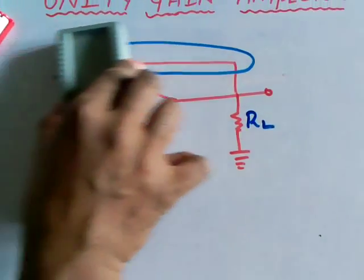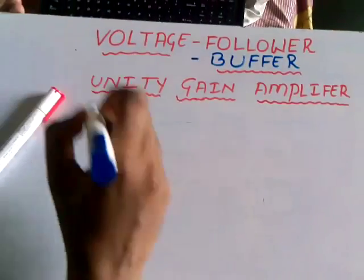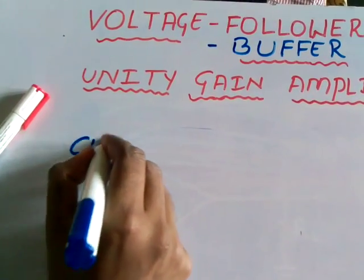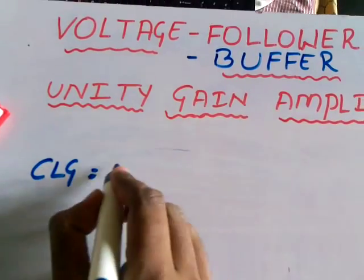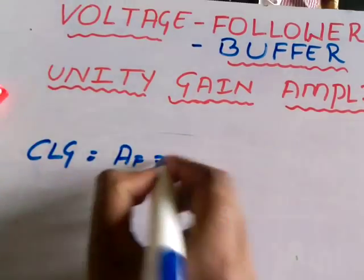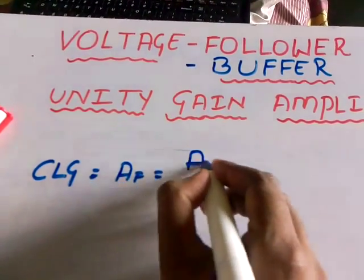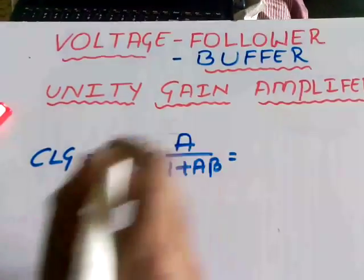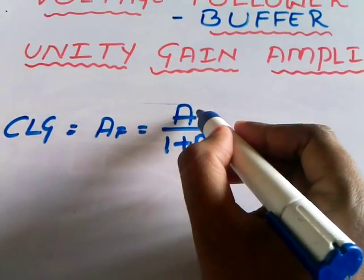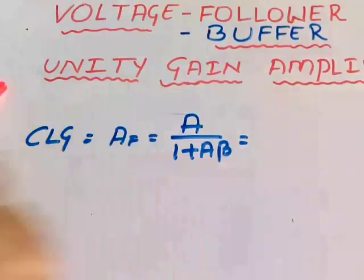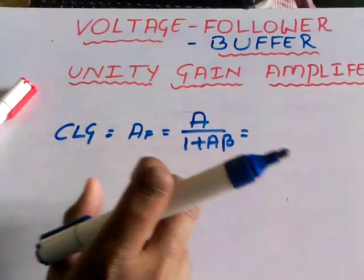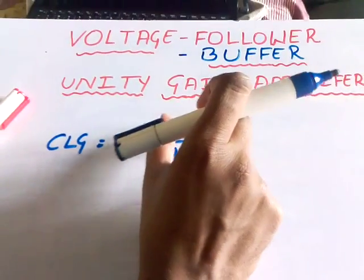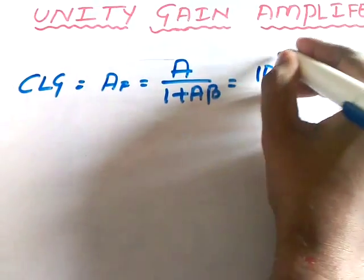By this, we can now calculate the closed loop gain of the device. That is, closed loop gain is equal to the forward gain — the transfer function is A divided by 1 plus A·beta. Where A is the internal amplification gain of the operational amplifier. As you know, the internal amplification gain of an operational amplifier is very high, that is, almost equal to 10 to the power 6.